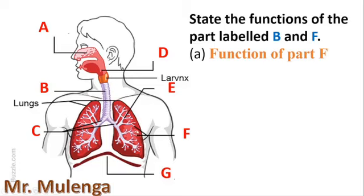The alveoli, we are saying, these are the tiny balloon-shaped air sacs that are located at the end of these bronchioles. As you can see here, the alveoli are being formed. These are located at the end of the bronchioles, that are found in the lungs.